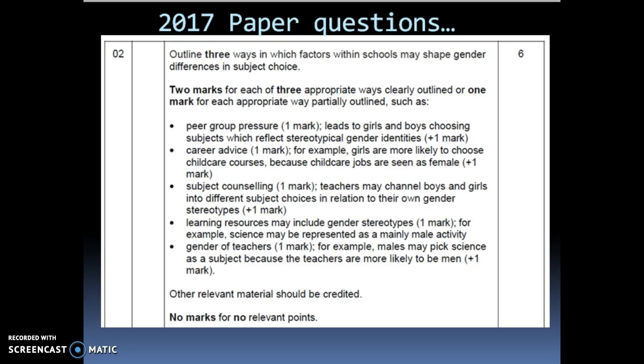So, let's have a gander at the mark scheme. So, the most popular one, which appeared majority of the time, especially when I was marking, was the peer group pressure one. So, girls feared looking butch or they were called gay for choosing subjects like PE, for example. So, you've got the peer group pressure and you've got the indication of girls and that they're failing to choose certain subjects such as PE. That ticks all the boxes and that got awarded the two marks. Likewise, you've got your career advice from other significant others such as careers advisors or teachers. Subject counseling. Teachers channeling boys and girls into different subjects. Learning resources and the gender of teachers also attract or discourage certain students and just make sure that you are linking to male, females and whether they are attracted or put off that subject.